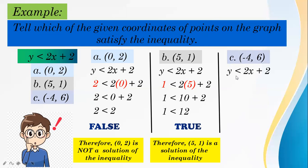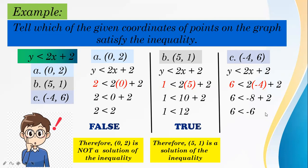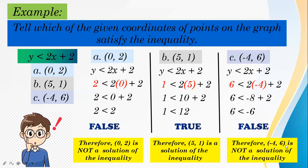For letter C, the point is (-4, 6). Substituting into y less than 2x plus 2: y is 6 and x is -4, so we get 6 less than 2 times negative 4 plus 2, which gives 6 less than negative 8 plus 2, that is 6 less than negative 6. The statement is false because 6 is greater than negative 6. Therefore, (-4, 6) is not a solution. The answer is B — (5, 1) is a solution of this inequality.